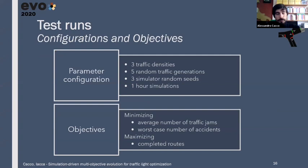So, the framework was configured in such a way to do three traffic densities for each individual, several simulations, for three traffic densities times five sets of synthetic routes times three simulator random seeds. Simulation lasts one hour in simulation time. And we run this with some objectives that are minimizing the average number of traffic jams and the worst number of accidents ever recorded, while maximizing the number of vehicles that managed to arrive at their destination.